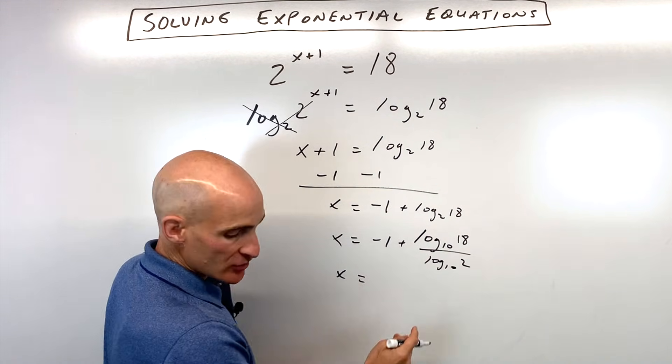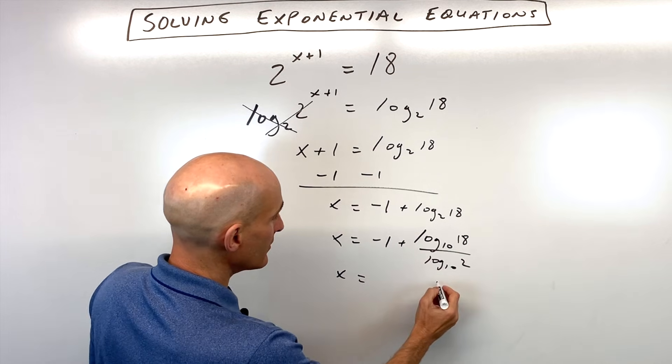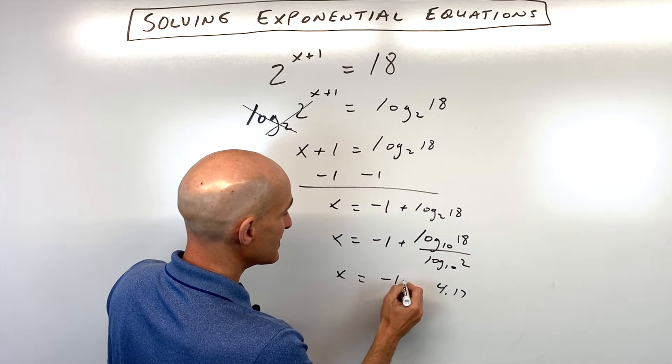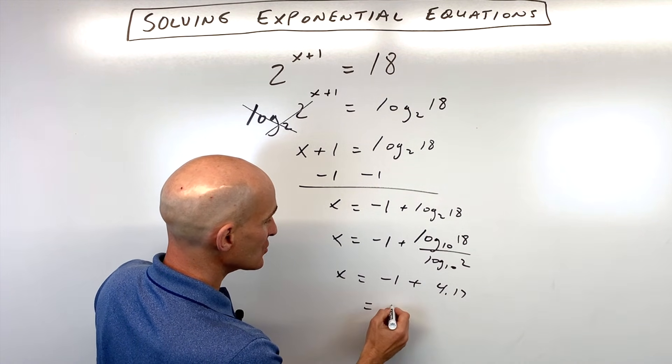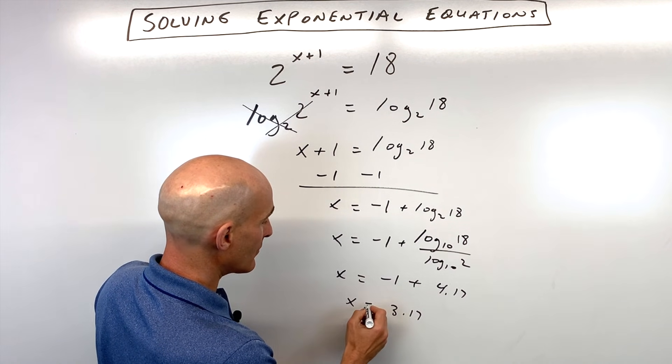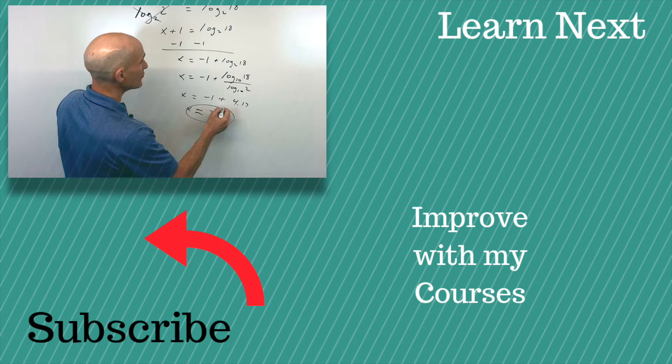I did this earlier. This came out to 4.17 plus the negative 1, so that final answer is approximately 3.17.